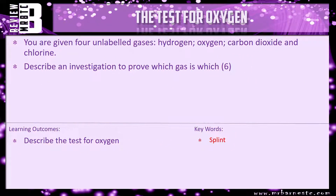That's the end of this video. I have got a review question for you: you are given four unlabeled gases — hydrogen, oxygen, carbon dioxide, and chlorine. Describe an investigation to prove which gas is which. If you can't remember the tests, I'll put a link in the top right-hand corner — click there and it will give you all the different tests. For example, to find out which one's oxygen, put a glowing splint in. If it relights, it's oxygen; if not, it's either hydrogen, carbon dioxide, or chlorine. Then you continue onwards until you've found out which one is which.